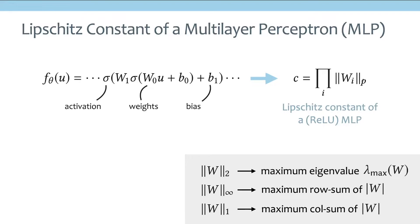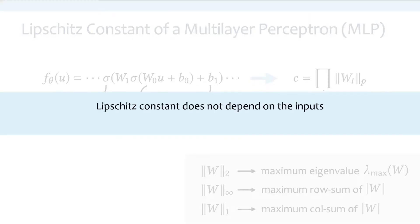And just a refresher, the computation will be different depending on which p we choose to compute the norm. For example, if we use 2-norm, it corresponds to maximum eigenvalue. If we choose infinity norm, it corresponds to the maximum row sum of the absolute values. And if we choose L1 norm, it means the maximum column sum.